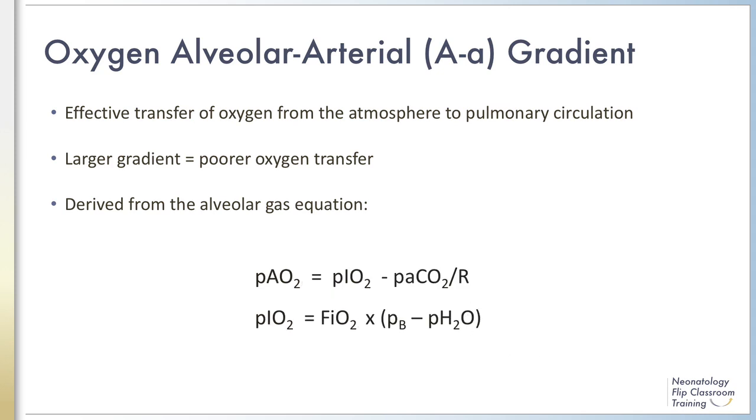The PiO2 is obtained from the atmospheric gas pressure, the water vapor pressure, and the FiO2 in decimal form.